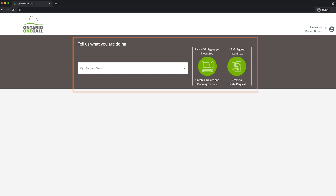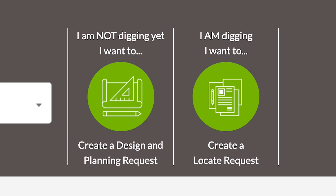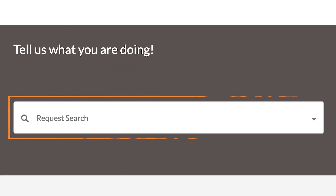On the main menu, you can Create a Design and Planning Request where you can obtain maps of buried pipes or cables for planning purposes. This is not a locate request, so always remember to submit a formal locate request once you have your dig date. If you already have your dig date in mind, you can request locates for your upcoming work. Remember to provide at least 5 business days notice for any locate request. You may also search for locate requests you've entered previously.